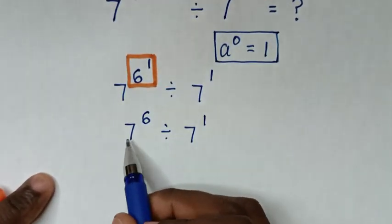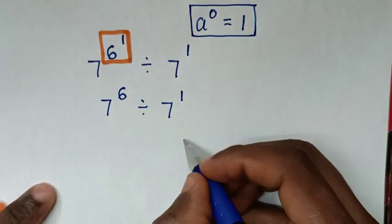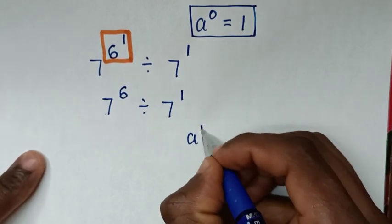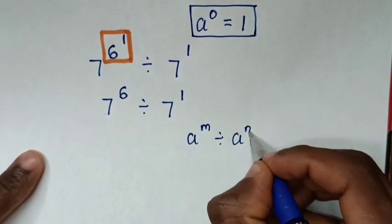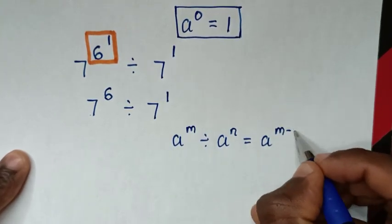Then from here 7^6 ÷ 7^1 is in the form of exponential rule, which is a^m ÷ a^n = a^(m-n).